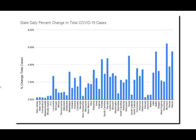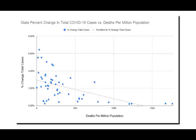This next graph shows yesterday's daily percent change in total COVID-19 cases for each state. These states are in the same order along the x-axis as they were on the previous graph, but the previous graph decreased from left to right, while this graph generally increases from left to right. What this graph shows us is that states with lower death rates on the right side of the graph are seeing a larger increase in the number of cases right now.